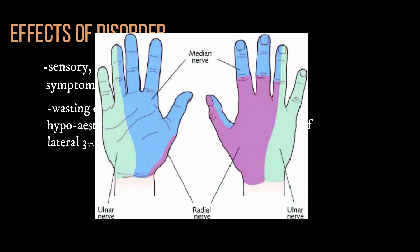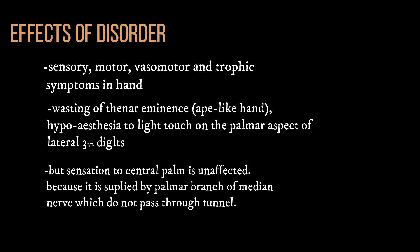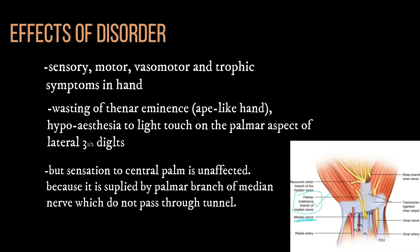This is because the lateral three and a half digits are supplied by the median nerve, the medial one and a half digits are supplied by the ulnar nerve, and the posterior side of the hand is supplied by the radial nerve. The sensation over the central base of the palm is unaffected because it is supplied by the palmar branch of the median nerve, and this branch does not pass through the carpal tunnel — it passes from the upper aspect of the carpal tunnel.